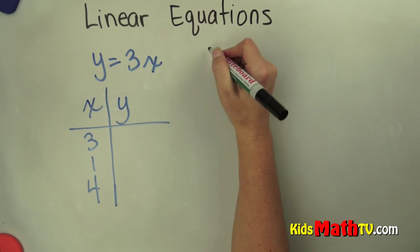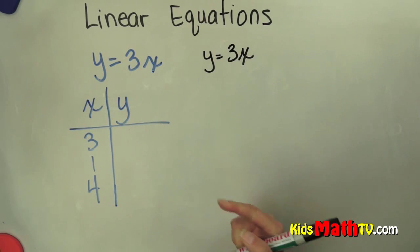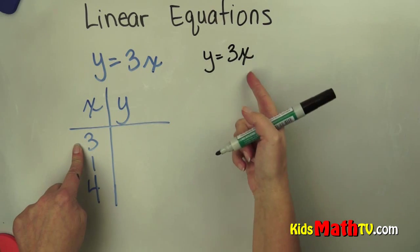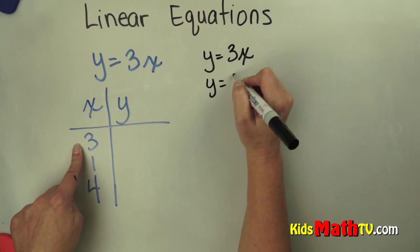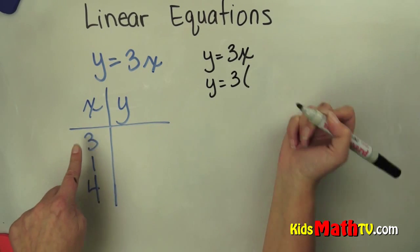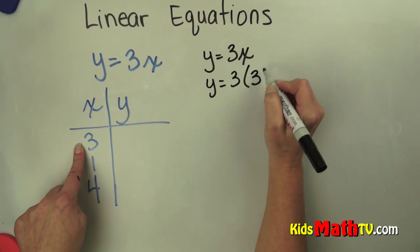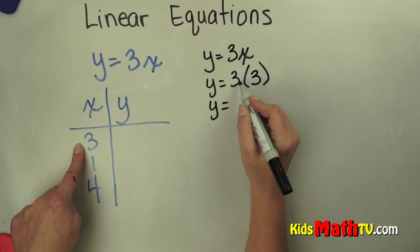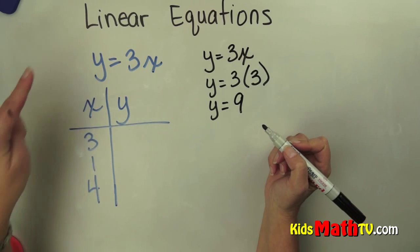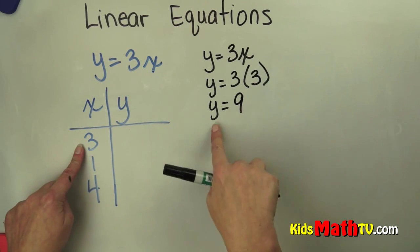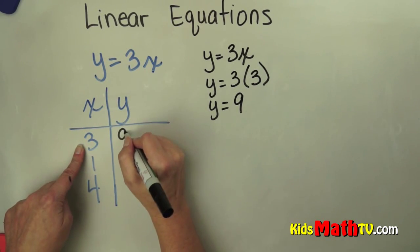So first of all I start by rewriting my equation, y equals 3 times x. And then I take this x and I substitute it in instead of the x. So y equals 3 times x, which is now 3. And when I do that, 3 times 3 is 9. So in this equation, if x is 3, y equals 9. So I can put 9 here.